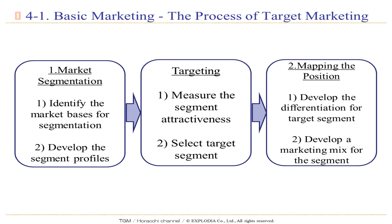There are three boxes from left to right. Number one: market segmentation. In the middle: targeting. And number three: mapping the position. For market segmentation, number one is to identify the market basis for segmentation — identify your market segment. Number two: develop the segment profiles — graph the details of your targeted segment. For targeting, number one: measure the segment attractiveness in terms of business, which is essentially a business feasibility study. And number two: select the target segment.